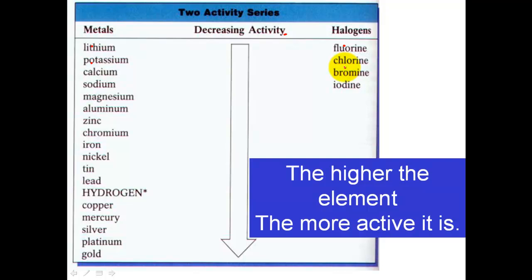I also want to key in on what's at the very bottom of the list — gold, platinum, silver. These are very large elements with a lot of electrons and energy levels, and therefore they're not going to be very active. Towards the top, as a general trend, lithium and potassium are smaller atoms with smaller atomic radii, meaning higher electronegativity and higher ionization energy. You see that same trend with fluorine and chlorine as well.